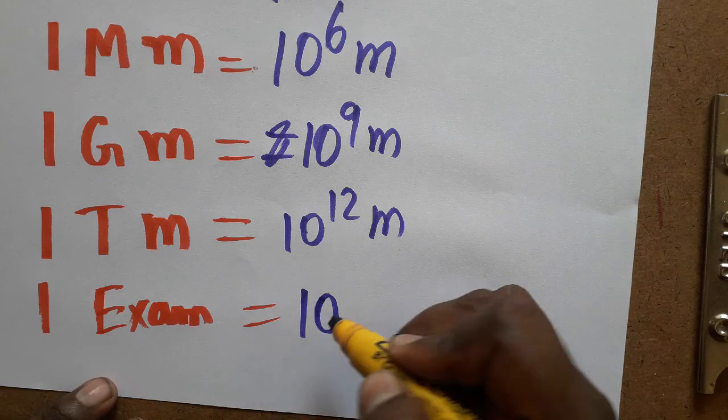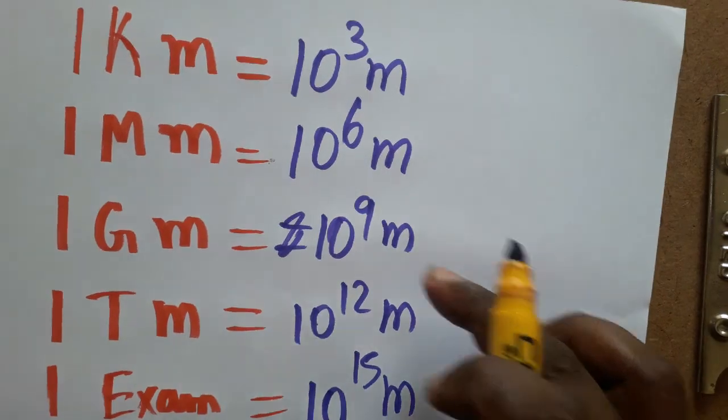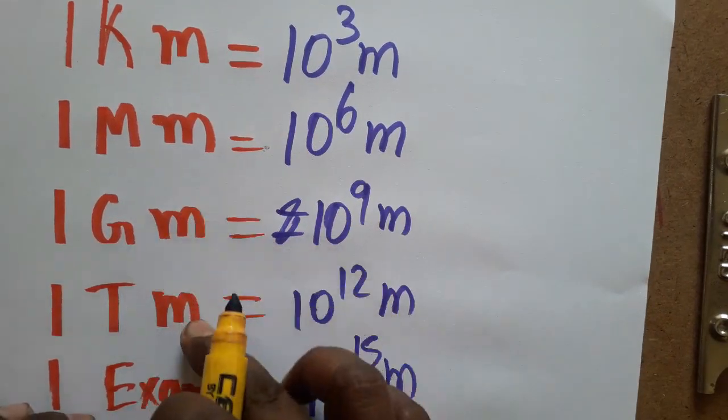Always you should write rise with the 3, 3, 3 powers. Kilometer, megameter, gigameter, terameter, exometer - the power you can rise as 3.